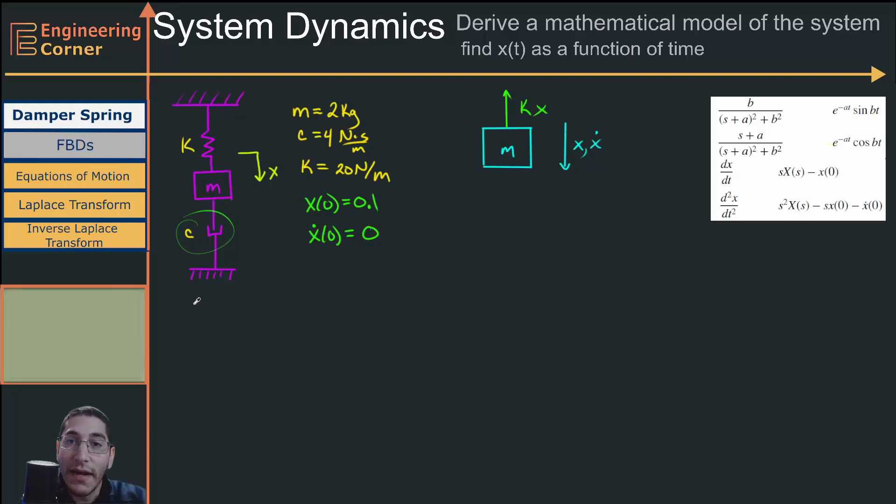Now c is my damper, and my damper force is going to oppose my velocity. So c is going to go up with a magnitude of c times my velocity. So now that I have done my free body diagram, I want to figure out the equation of motion.